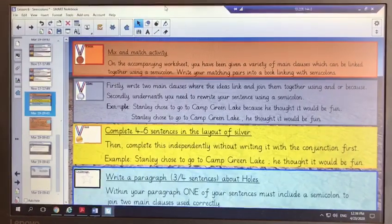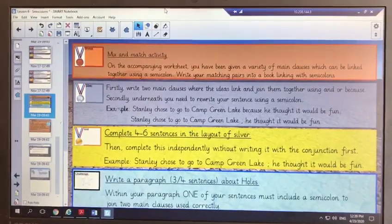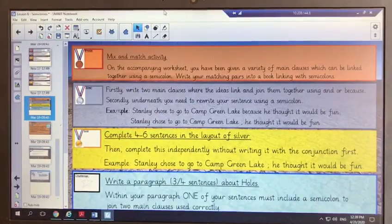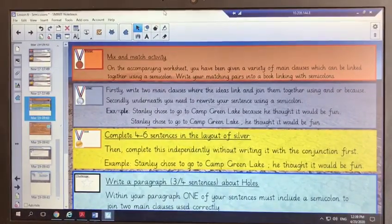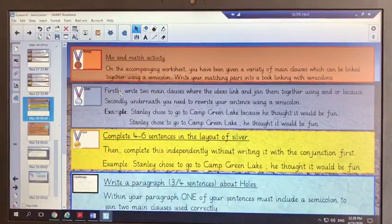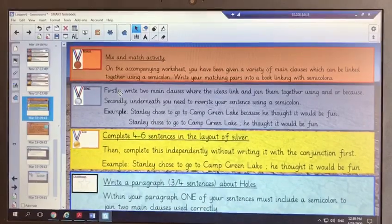For the independent activity, we would like everyone to start off with bronze and work through the activities. Try to challenge yourself by doing as many of the activities as possible so you can get lots of practice using semicolons instead of conjunctions.